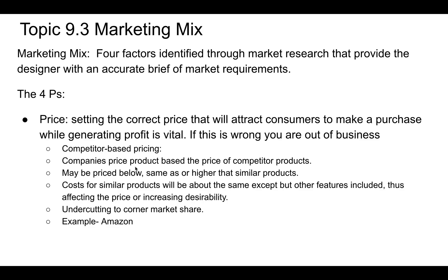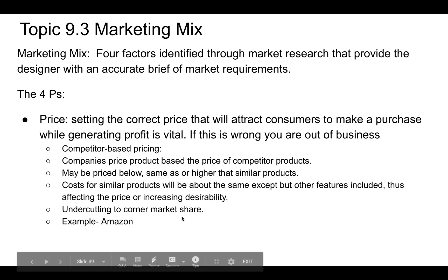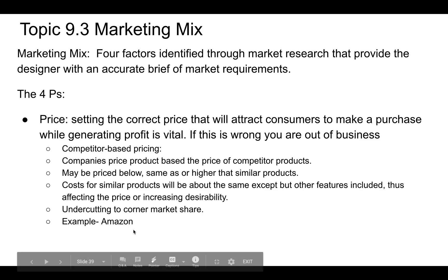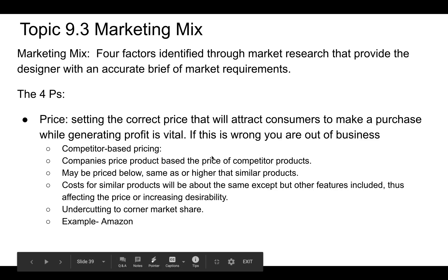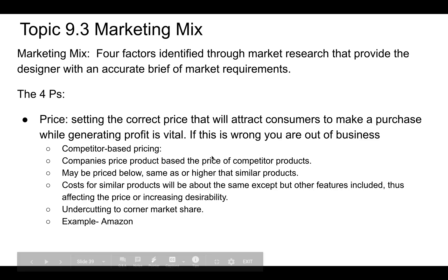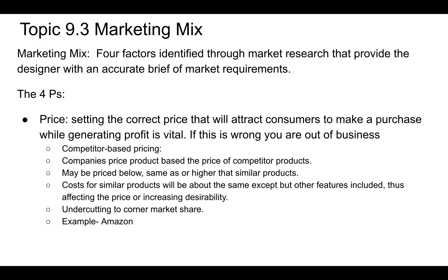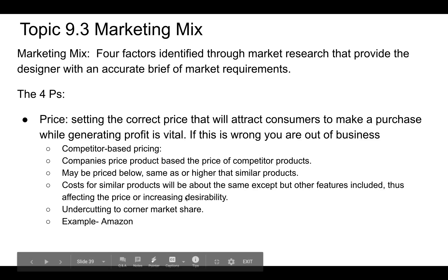Competitor pricing is where companies price their products based on their competitors' prices — below, the same, or higher. Sometimes they add extra features for the same price to attract market share, or they might undercut their competitors to corner the market. Amazon is classic for this: if you have an online store on Amazon and they notice your product is selling well, they'll start selling that product at a lower price than you, and basically drive you out of business. Amazon can afford to take losses on it, undercut your prices so you can't sell anymore, and then become the only place that sells it.